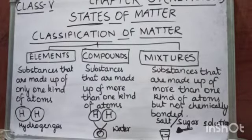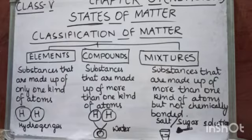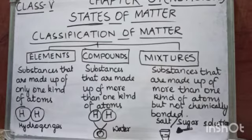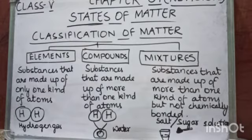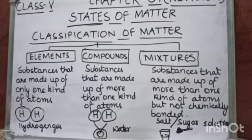After states of matter comes the classification of matter. Depending upon the nature of atoms present in them, matter is classified into elements, compounds, and mixtures. Elements are substances that are made up of only one kind of atoms. For example, hydrogen is made up of hydrogen atoms only; oxygen is made up of oxygen atoms only; chlorine is made up of chlorine atoms only. So hydrogen, oxygen, and chlorine are all elements.